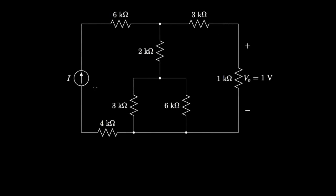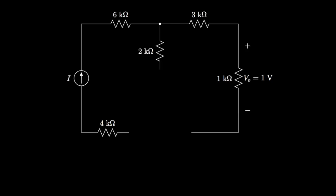Here's another example with a single current source providing current to a network of resistors. I'd like to select the value for the current source — called I — so that the voltage across the 1-kilohm resistor, V0, is 1 volt. The first thing we might do is combine the 3-kilohm and 6-kilohm resistors into a single 2-kilohm resistor.